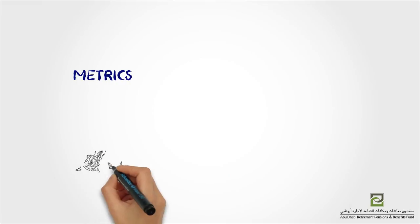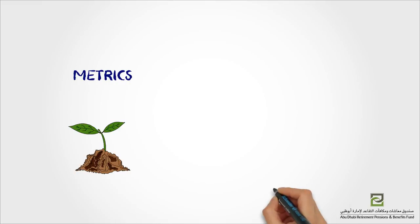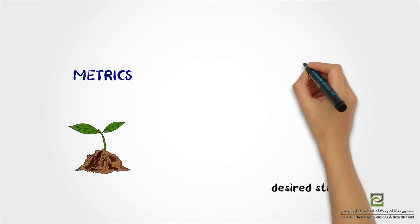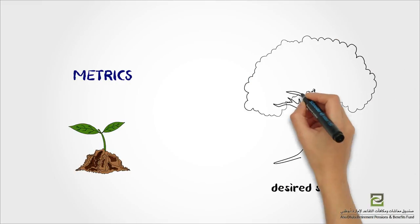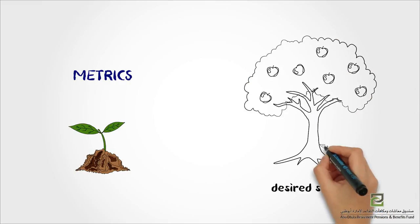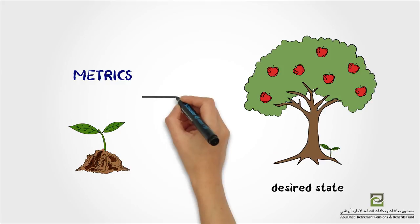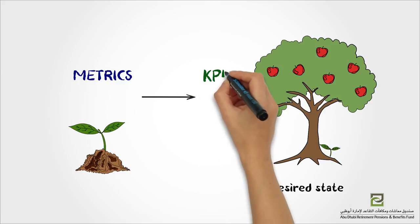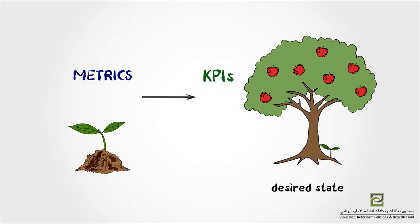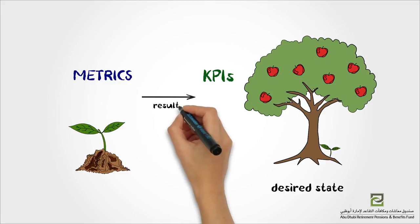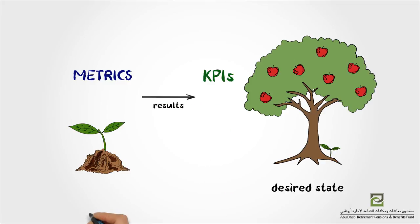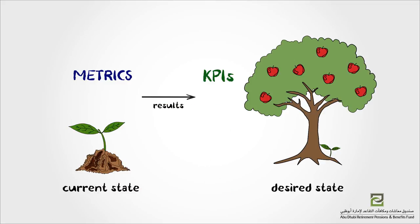When metrics reflect the achievement of a desired state, they become key performance indicators, or in short, KPIs. A KPI expresses the achievement of a desired level of results in an area relevant to the evaluated entity's activity.